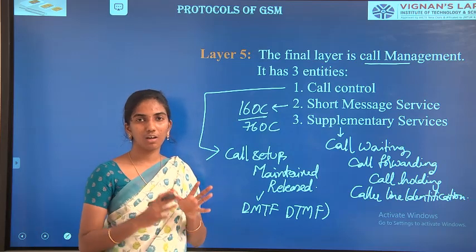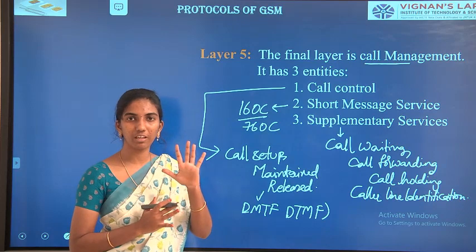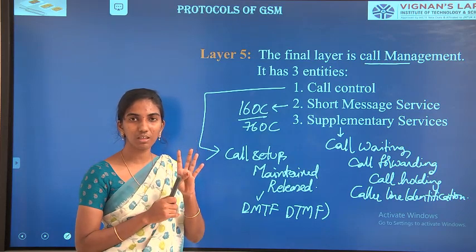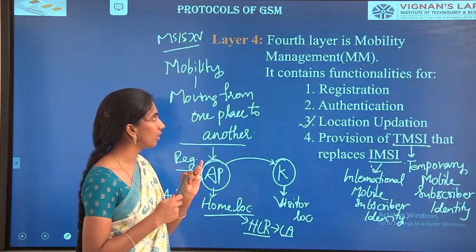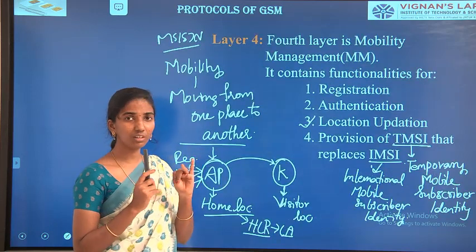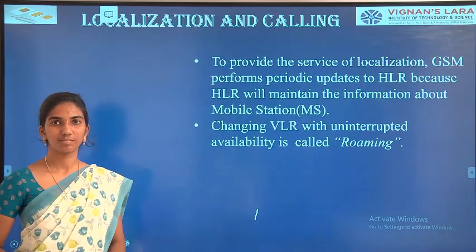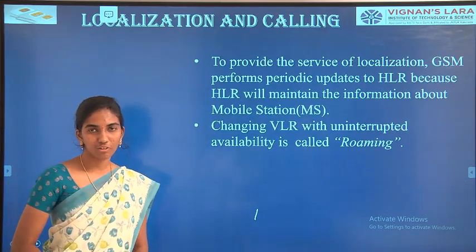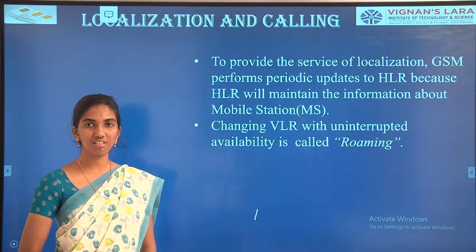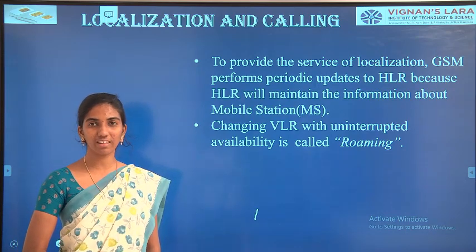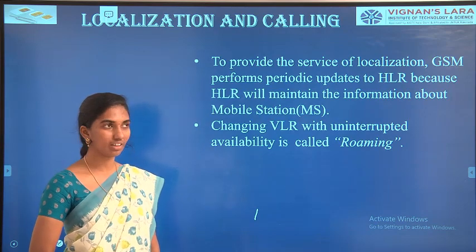So in the protocols of GSM we dealt with five layers: one is Radio, second is LAPDM, third is Mobility Management, fourth is Radio Resource Management, and fifth is Call Management. The next topic is localization and calling. The main quality of GSM is automatic rendering of user details — whenever we move to other places, the HLR automatically knows where we are present.